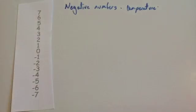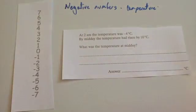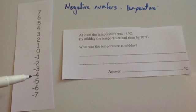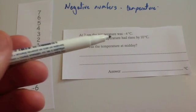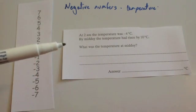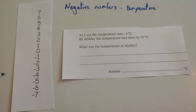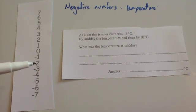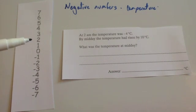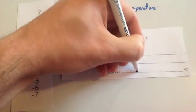Let's have a look at another question. At 2am the temperature was minus four. By midday the temperature has risen 10 degrees Celsius. What was the temperature at midday? So we're going to go 10 up from minus four: one, two, three, four, five, six, seven, eight, nine, ten — so the answer would be six degrees Celsius.